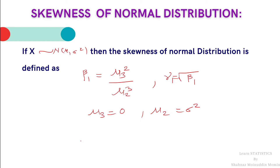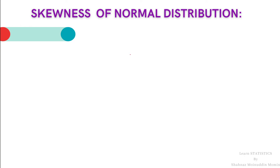We have already studied the central moments of a normal distribution and the relation between cumulants and central moments. If students want to learn that relation, click on the i button at the top right corner of the screen; the link is also mentioned in the description below. Therefore, the value of beta 1 is equal to 0 squared divided by sigma squared cubed, which is equal to 0 divided by sigma to the 6, and that is 0. Hence, beta 1, the coefficient of skewness, is equal to 0, and gamma 1 is also equal to 0.